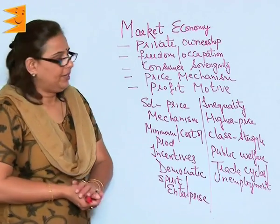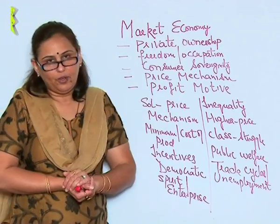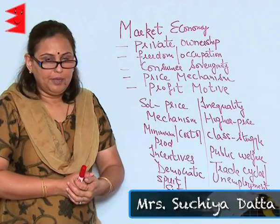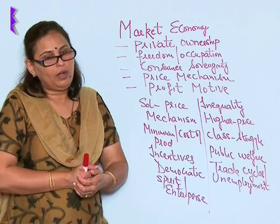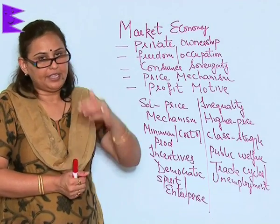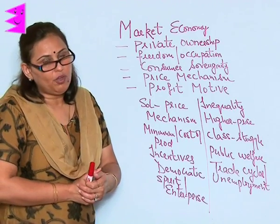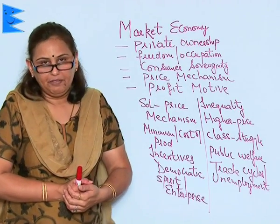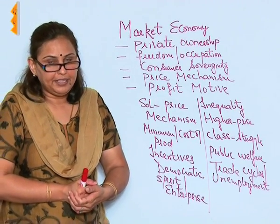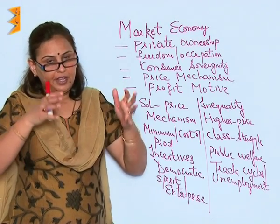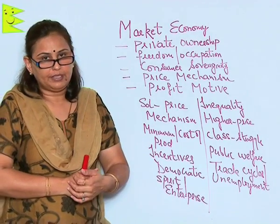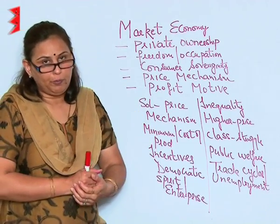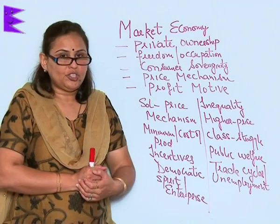Let me talk about the second kind of economy, which is called the market economy. The market economy is also called the capitalist economy. The basic feature is private ownership — nearly everything is owned by private individuals, which means the government has a negligible role to play in the production of the country.